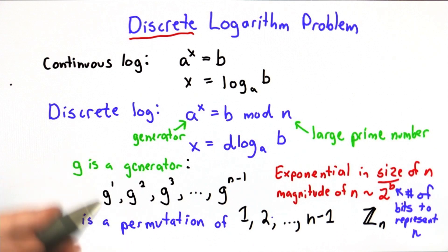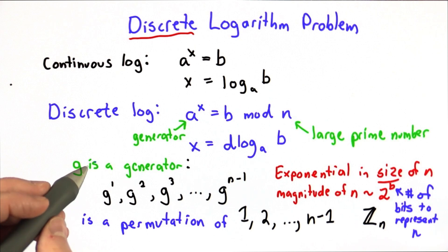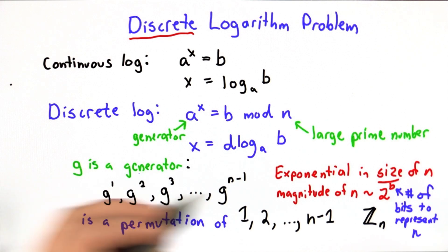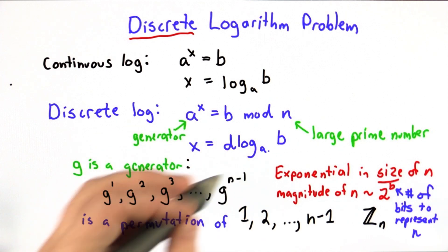So as long as that's the best solution to discrete log, then for very large n, it's intractable. No matter how many computing resources you have, you can't do this exponential search. You can't find the value of x that's the discrete log of b base a mod n.